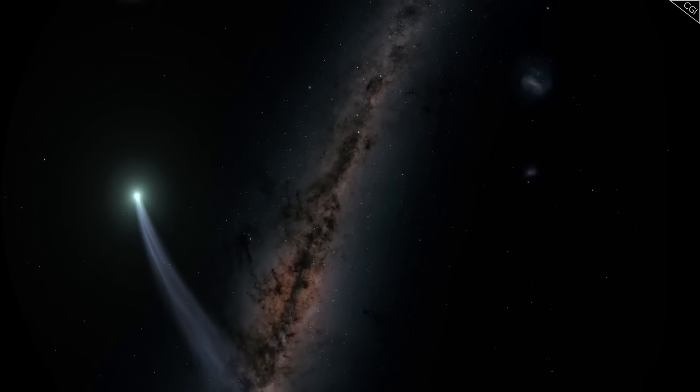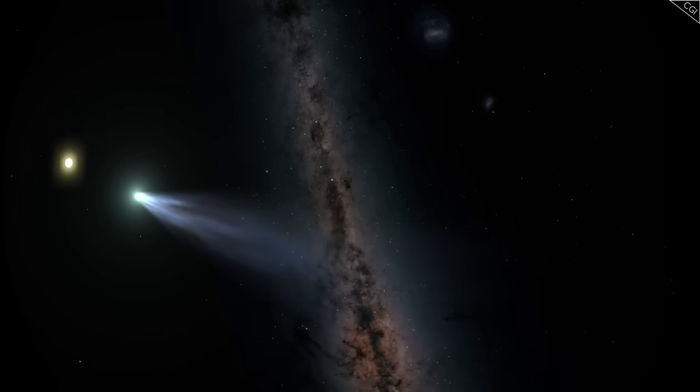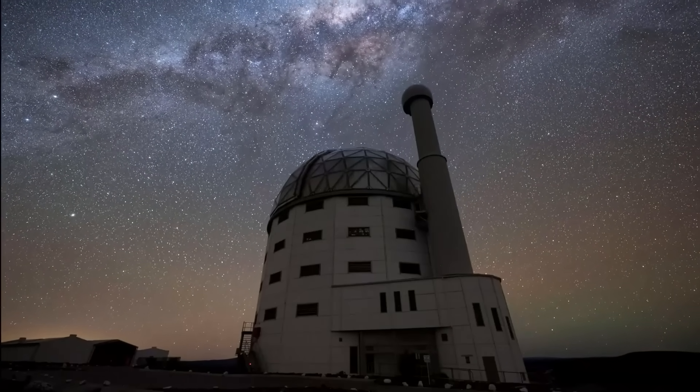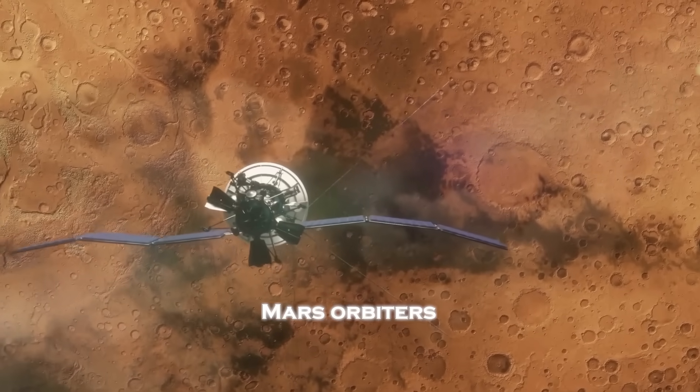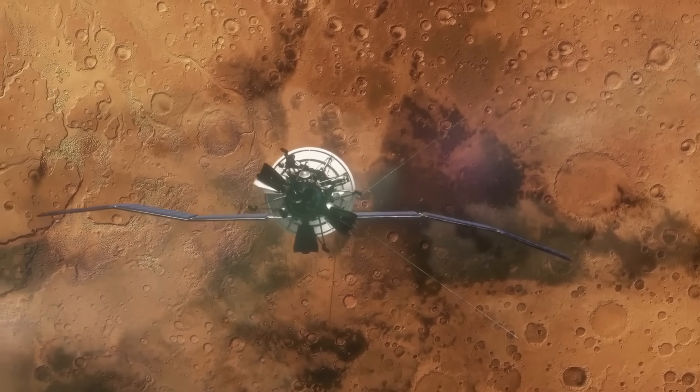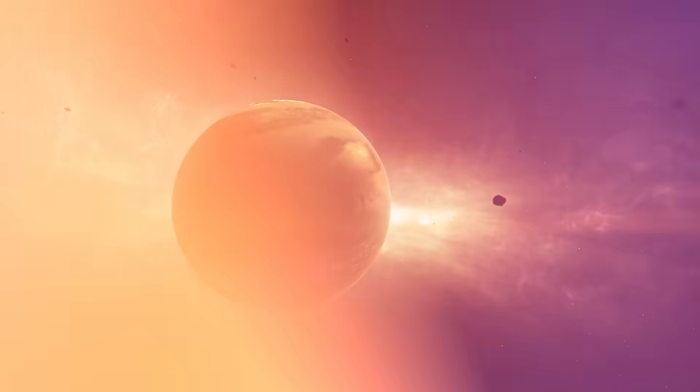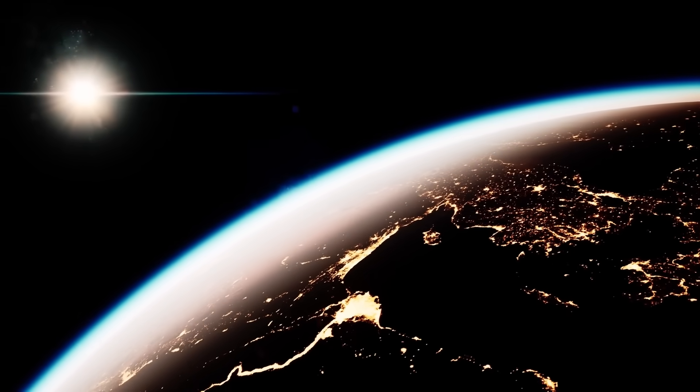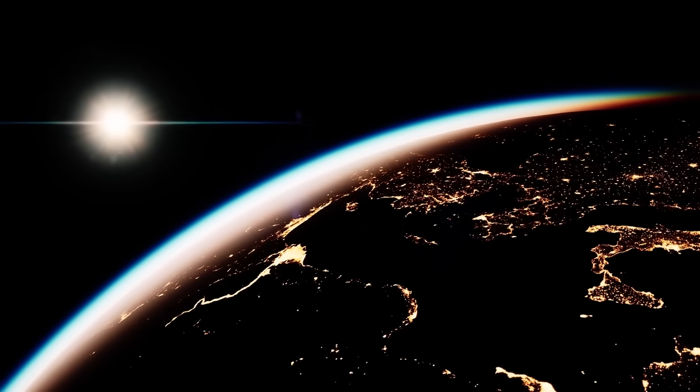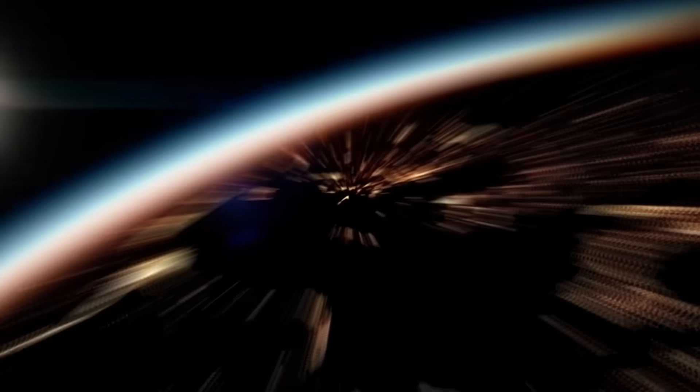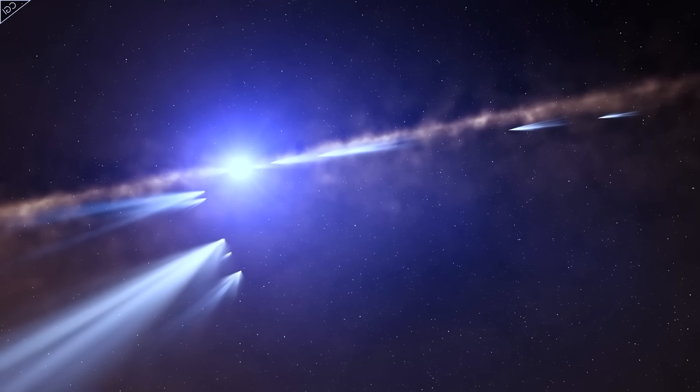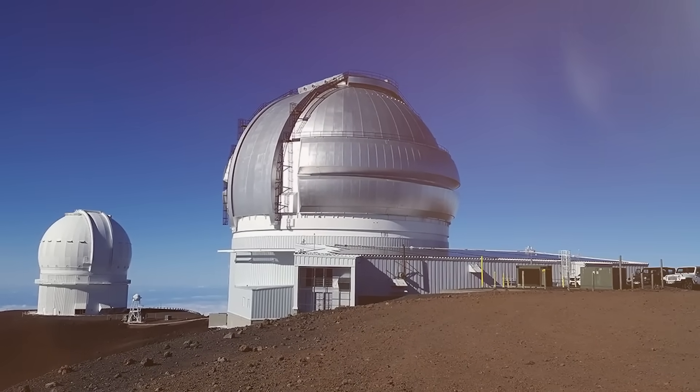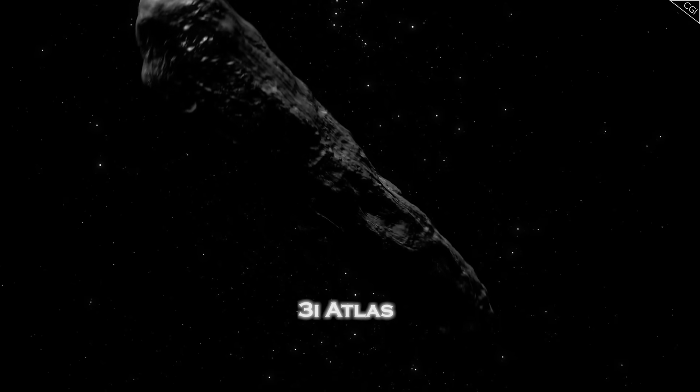If 3I Atlas had shifted its orbit intentionally, then someone had to have noticed before the rest of the world. And that's when attention turned to NASA and JPL. As early as September, NASA's Mars orbiters had been perfectly positioned to photograph the object at close range during its solar flyby, but those images have never been released. Not a single frame. Internal sources claim the data is being analyzed, but others suspect something more deliberate—censorship.